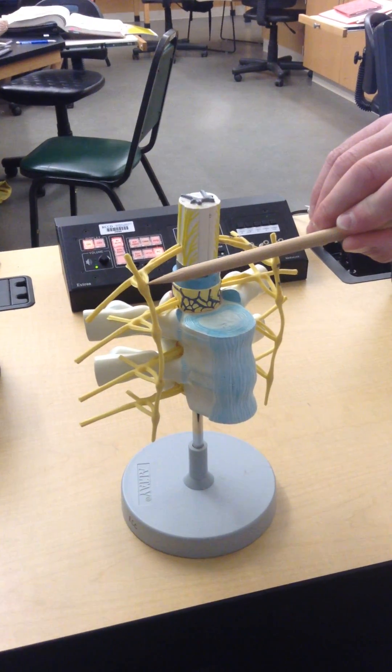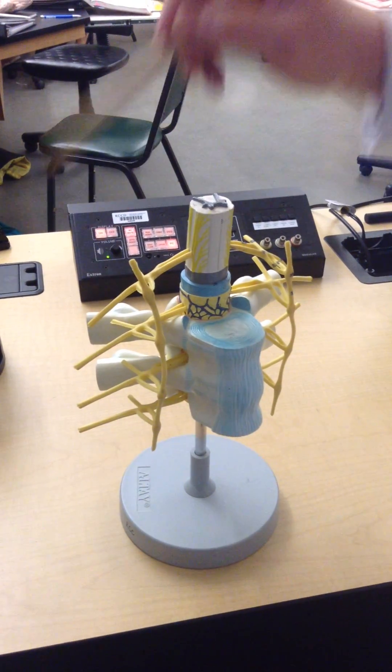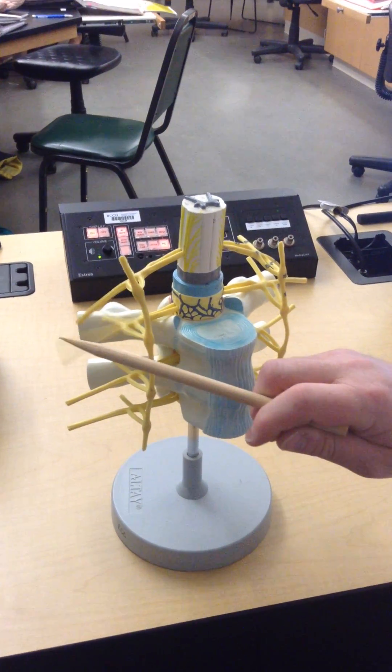go through the chain ganglia, and either synapse in the chain ganglia and go above, below, or at the same level. Or it'll move straight through it and go down or up into a splanchnic nerve that innervates some organ above or below.